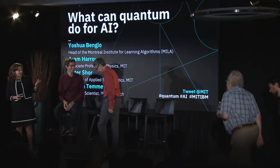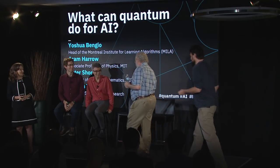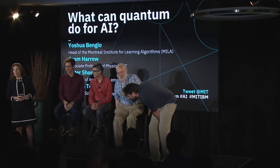We're delighted to have Aram Harrell, who will moderate the panel on what quantum can offer to AI. Aram is a professor of physics at MIT, and the founder of the HHL algorithm for solving linear systems in quantum computing. He works as PI on a project for quantum and AI, alongside Kristin Temm, a research staff member, and Peter Shor, the Moore's Applied Mathematics Professor at MIT.